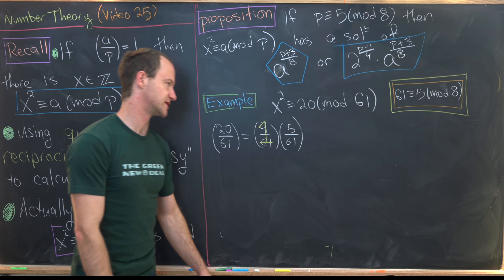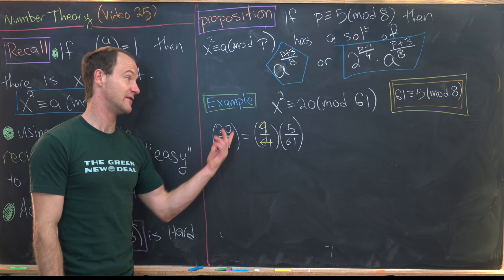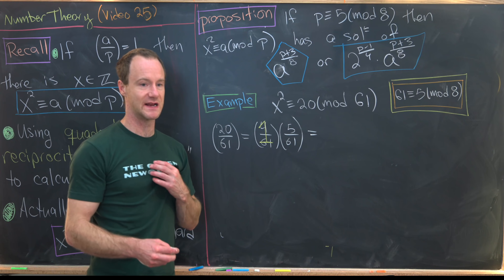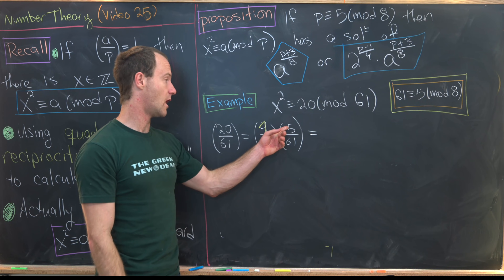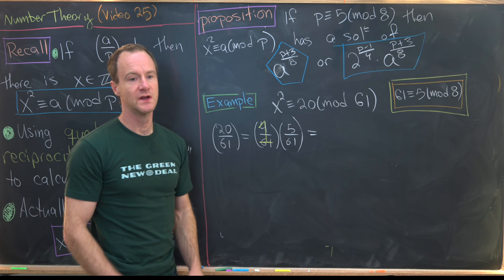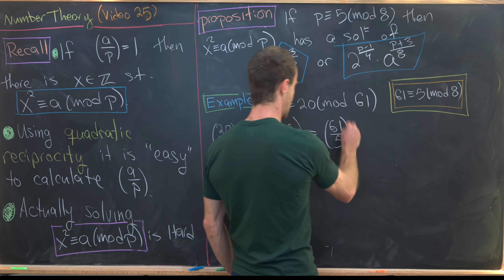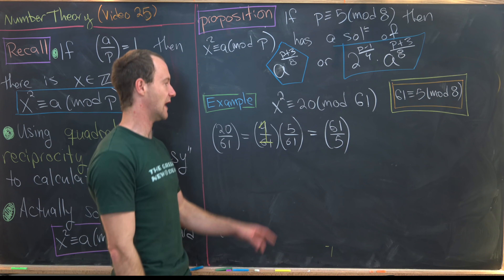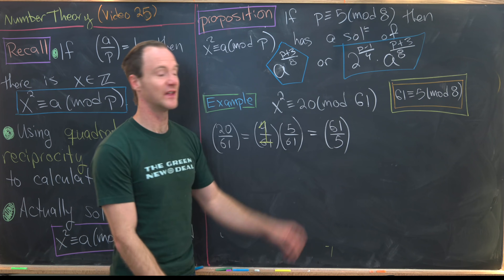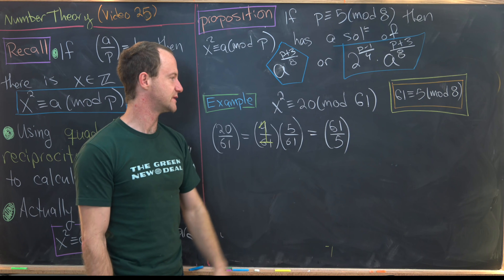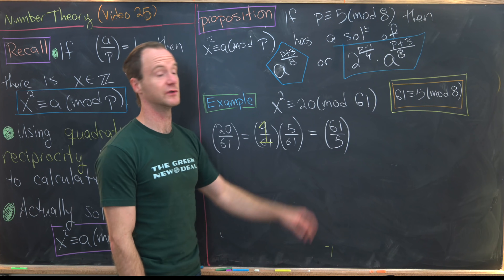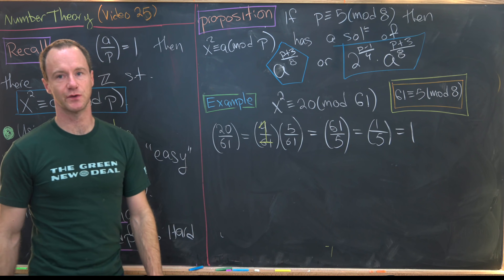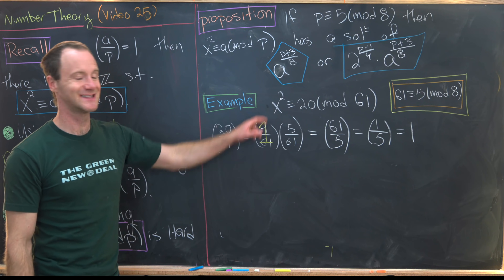Now we just need (5/61). Since 5 is an odd prime, we can apply quadratic reciprocity. Since 5 ≡ 1 mod 4, we can flip with no sign change: (5/61) = (61/5). Reducing 61 mod 5 gives 1, so (1/5) = 1. So the Legendre symbol is 1 and there is a solution.